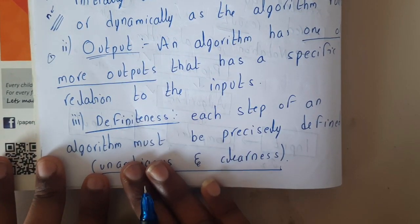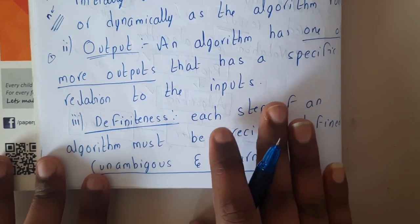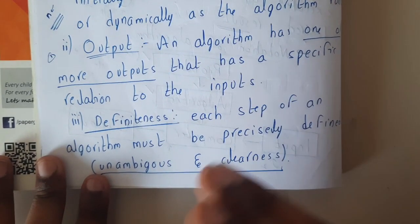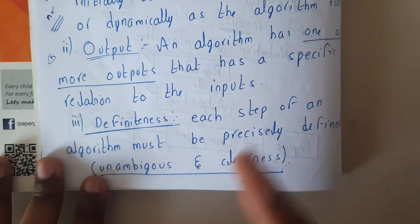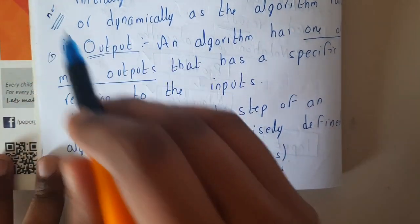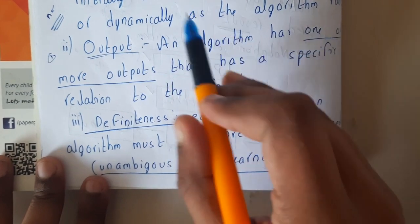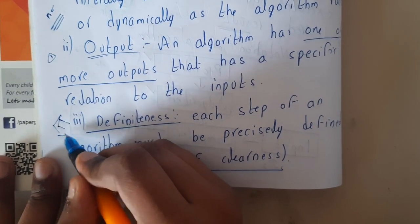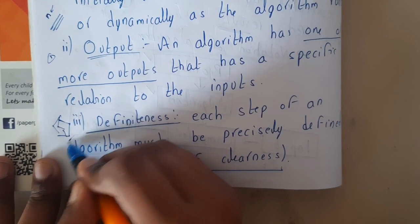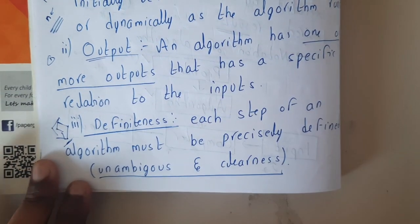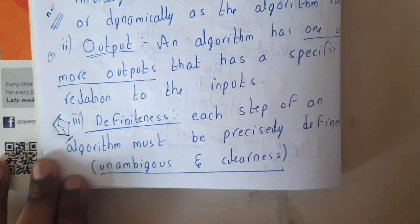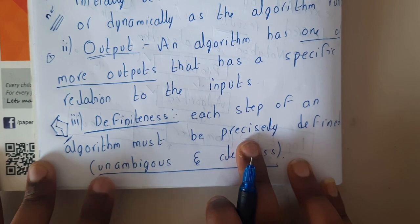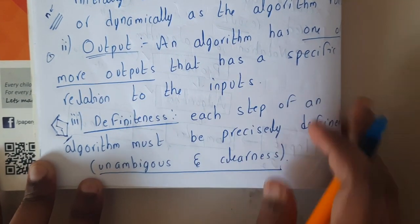Definiteness means the algorithm should be 100% clear without any ambiguity. There should not be multiple paths for a single solution. If you write for even but you wrote multiple conditions that all result in even, that is of no use. There should be a single, clear path. Each step of an algorithm must be precisely defined — clear and unambiguous.